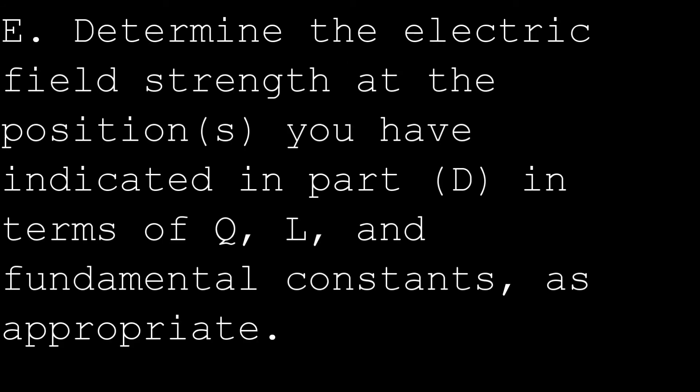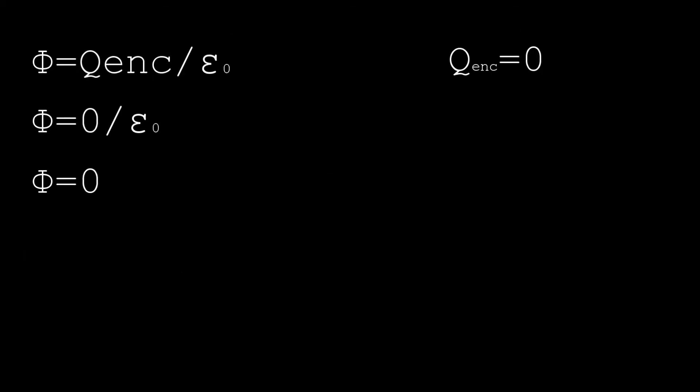Part E asks us to determine the electric field strength at the position indicated in Part D, in terms of Q, L, and fundamental constants. Since flux equals Q enclosed divided by epsilon naught, and the charge is a conducting sphere with no charge inside at point A, Q enclosed equals zero. Zero divided by any number is zero, so the electric field at point A equals zero.